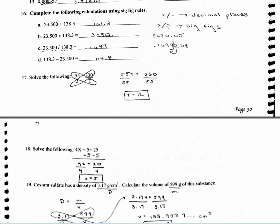For problem 17, you're just solving the problem. Since T is in your denominator, you're going to have to cross multiply. So 55 times T equals 330 times 2. You get this value. Since you're wanting to isolate T, you divide by 55 on both sides, and T will be 12.